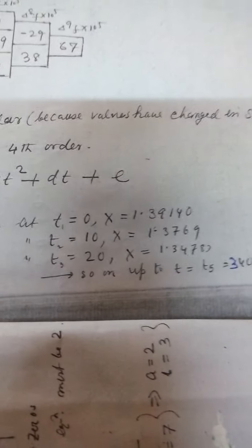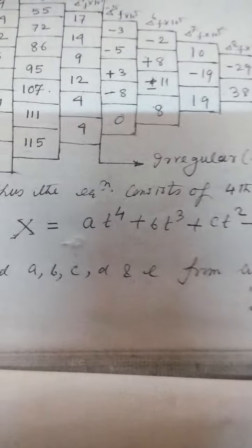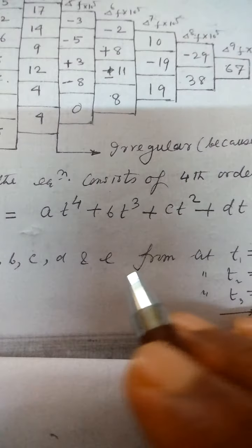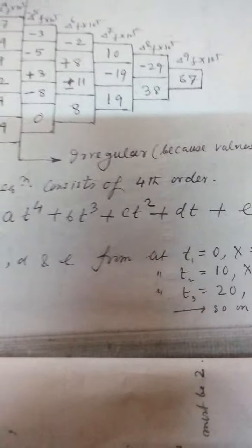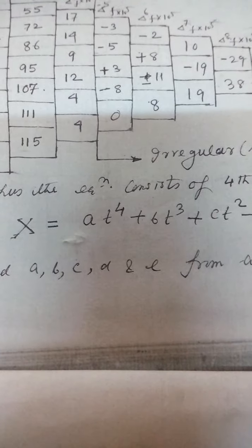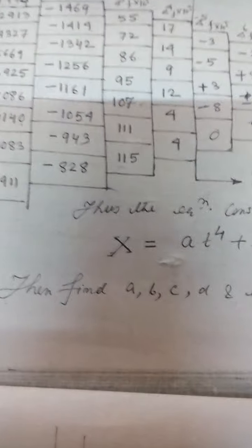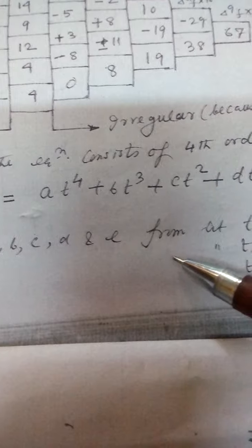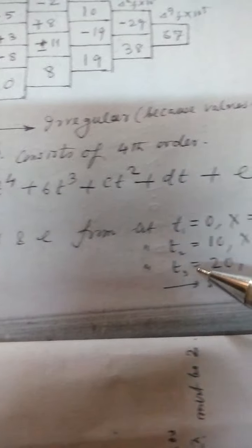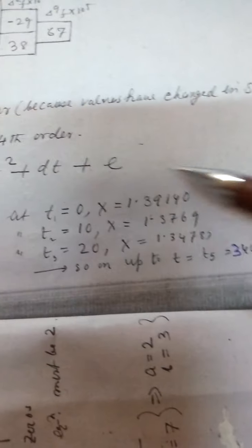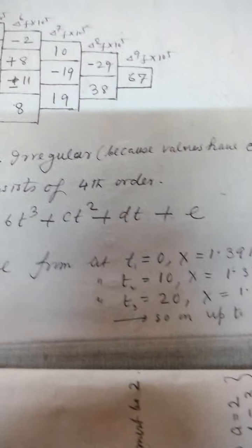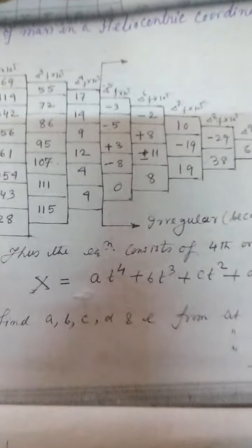From those conditions you can find out A, B, C, D, E — five coefficients — and thereby find the equation x as a function of time. This is left as an exercise for the reader; students should complete the problem on their own. Thank you very much.